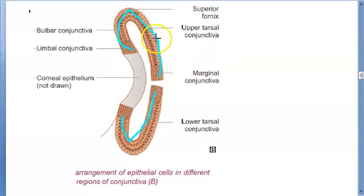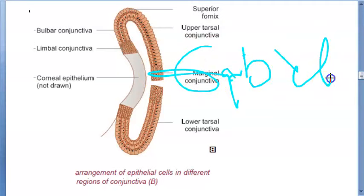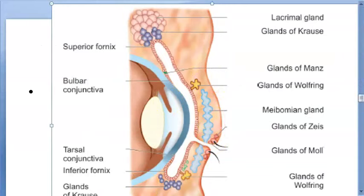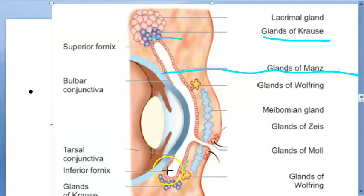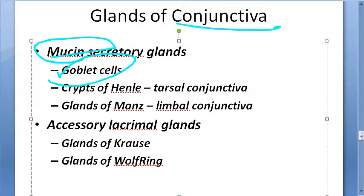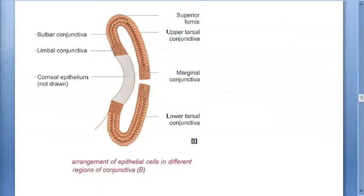The conjunctival epithelium is a two-to-five-layered non-keratinized epithelium. It contains goblet cells, which constitute about 10% of the epithelium and can secrete mucus. There are also many glands in the conjunctiva, including the glands of Krause, glands of Manz, and glands of Wolfring.